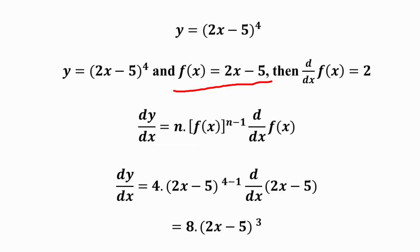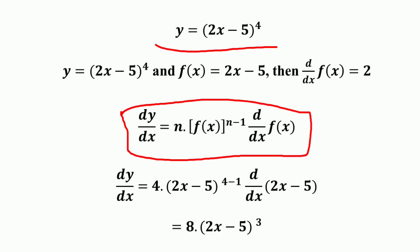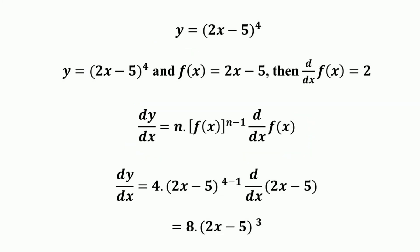So f(x) is 2x minus 5, and the derivative of f(x) — that is, the derivative of 2x minus 5 — is equal to 2. Then the derivative of the given function (2x minus 5)^4 equals exponent n times, and here the exponent is 4.